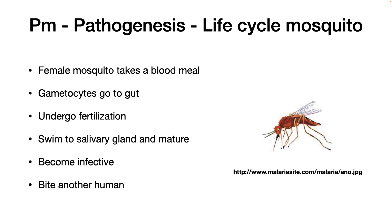The Plasmodia have two life cycles: one in the mosquito and one in humans. The parasite infects a female mosquito when it takes a blood meal from an infected human. The Plasmodium gametocytes go to the gut and undergo fertilization. They then swim to the salivary gland and mature there. At this point they become infective, and when the mosquito bites another human, they are transferred over. The Plasmodium species is absolutely dependent upon this mosquito, and if you eradicate the mosquito in an area, you also eradicate the transmission of this disease to humans.